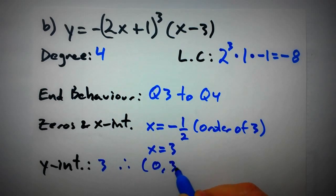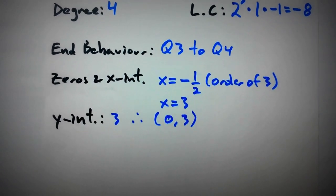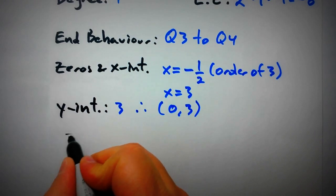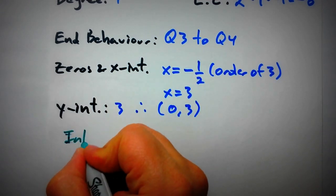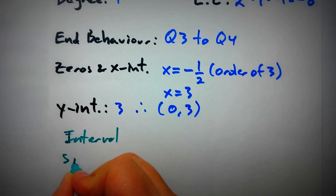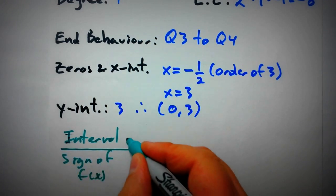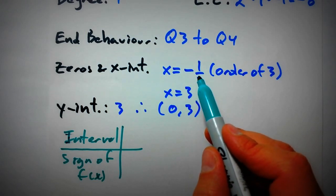Now we should create a table to figure out the sign of f(x) on the intervals of this function, just like in the previous example. We'll write the interval and the sign of f(x). The x-intercepts help us determine what those intervals are.